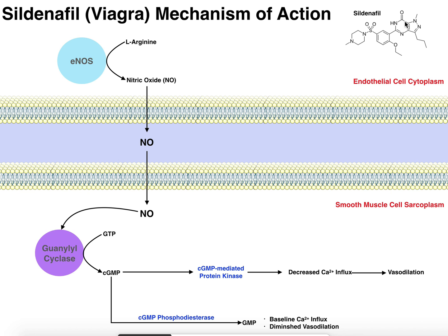We'll cover both the maintenance of erection and cardiovascular vasodilation. But before we get into that, we really need to understand the function of nitric oxide with respect to guanylate cyclase, and then this enzyme, cyclic GMP phosphodiesterase. This is what's happening without administration of Viagra or sildenafil.